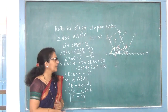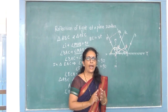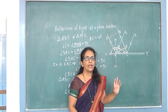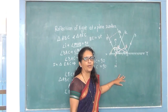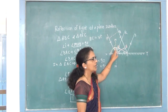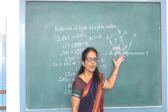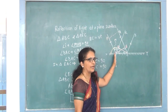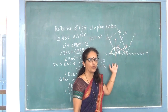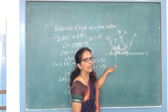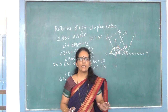So we have proved that angle of incidence is equal to angle of reflection — this is the first law of reflection proved using Huygens' wave theory. The second law of reflection states that the incident ray, reflected ray, and normal drawn at the point of incidence are all in the same plane. We can easily observe this: PA is incident ray, MN is normal, and AR is reflected ray — all are in one plane. The third law states that incident ray and reflected ray are on opposite sides of the normal, which we can also observe from the diagram.